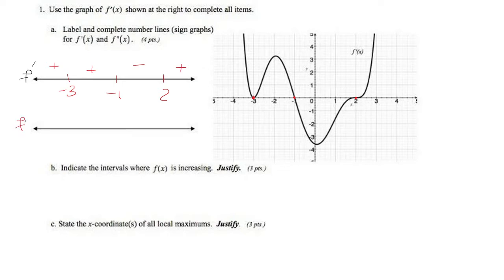Now for the second derivative number line, we're looking at when the concavity changes. Or in other words, when the derivative of the first derivative is 0. So that's going to be here, here, here, and here. So that would be negative 3, negative 2, 0, and 2.